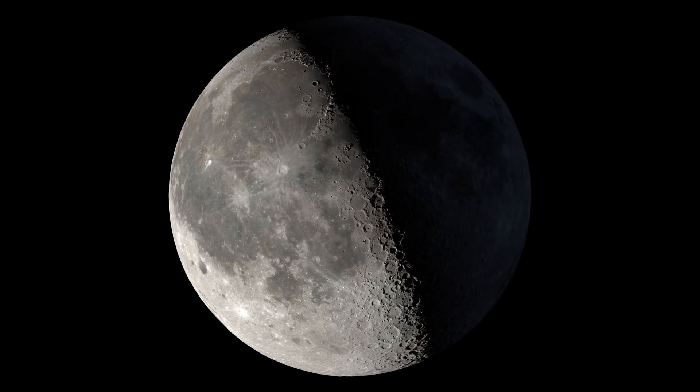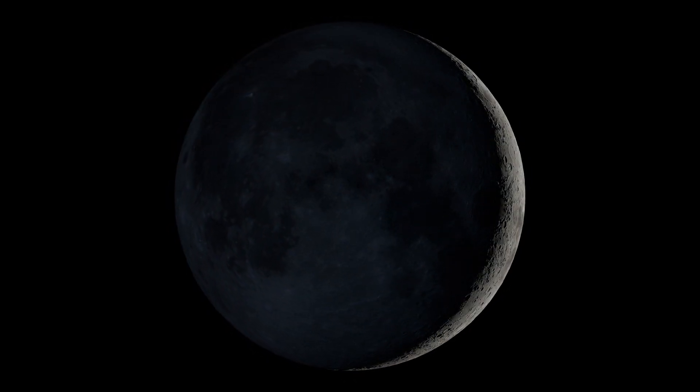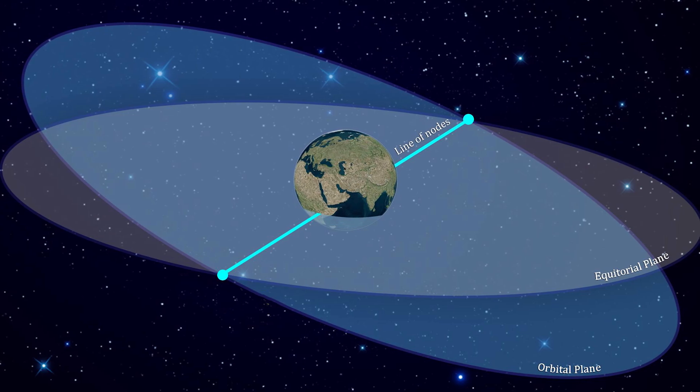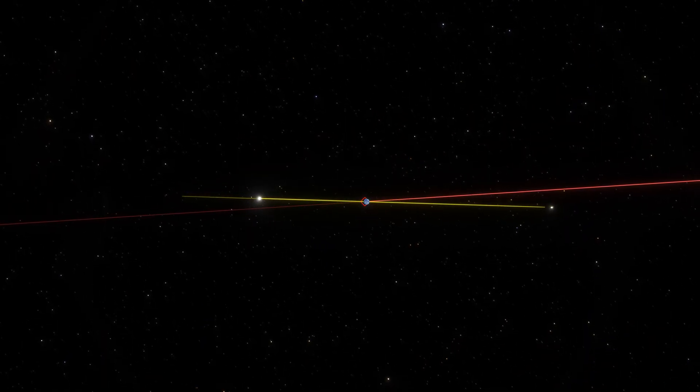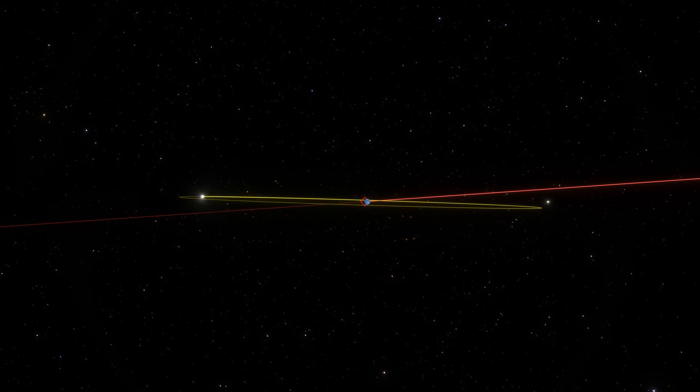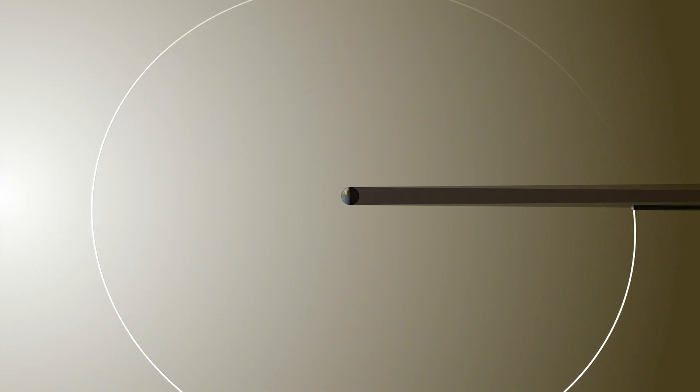But that's not all. There is another very important precessional movement of the Moon's orbit for which the Sun is responsible: the shifting of its nodes. You see, the Moon's orbit has a certain tilt relative to the plane of the ecliptic, which is the plane of Earth's orbit around the Sun. Specifically, this angle is a little over five degrees. This, by the way, is the same tilt that prevents us from seeing solar and lunar eclipses every month.